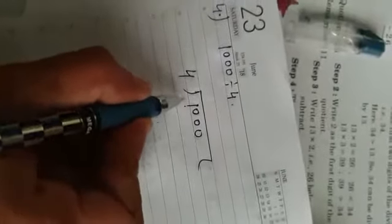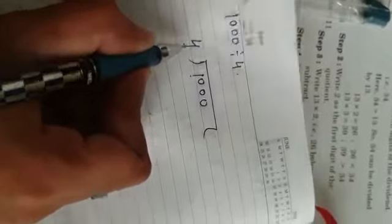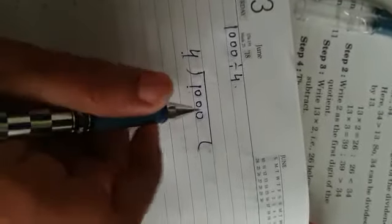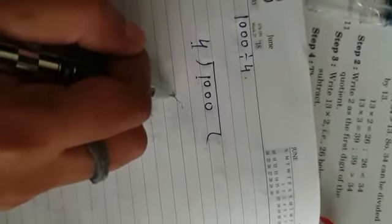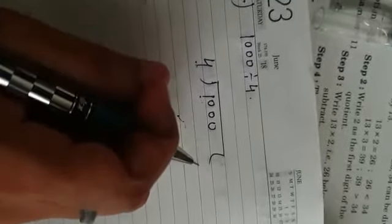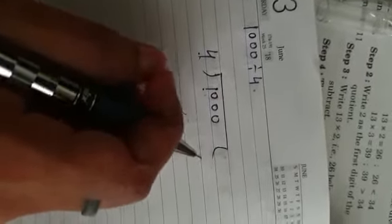Our next statement is 1000 divided by 4. Students clearly 1 is smaller than 4 and you have to take first two digits that is 10. You have to check for 10. 4 ones are 4. 4 twos are 8. 4 threes are 12. 10 does not come in the table of 4. So we will take 8.